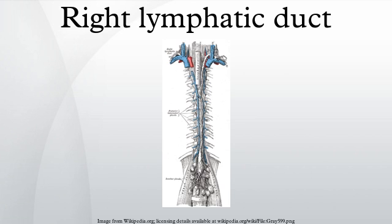The right duct drains lymph fluid from the upper right section of the trunk, the right arm, and the right side of the head and neck, and also, in some individuals, the lower lobe of the left lung. All other sections of the human body are drained by the thoracic duct.